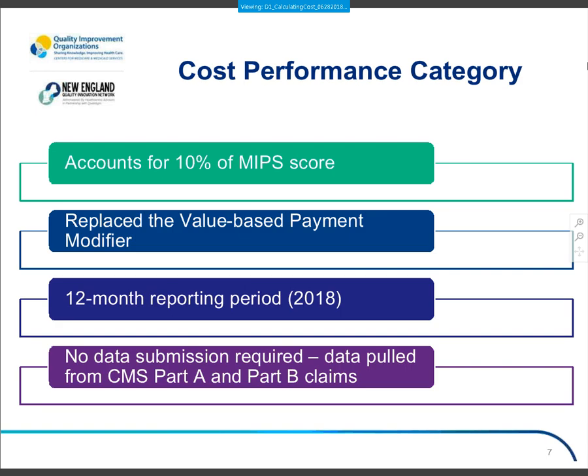Some key pieces of information about the cost performance category: it accounts for 10% of your MIPS score and replaces the value-based payment modifier from the PQRS days. It covers the full 12-month calendar year of 2018. Keep in mind you're not actually submitting data — CMS automatically pulls data from your Part A and Part B claims, runs their back-end algorithm on patient attributions, and calculates your cost rate from that data and utilization information.